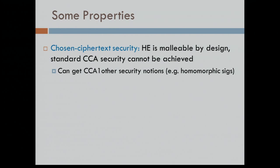Before talking about how to do homomorphic encryption, let me talk about some properties and limitations. One property that it definitely does not have is chosen ciphertext security — this is malleable by design. You cannot possibly get the standard notion of CCA security if your encryption scheme is homomorphic. You can get weaker notions, such as CCA1 or lunchtime-attack type security. There are other meaningful notions of non-malleability that apply, and homomorphic signatures is probably the most interesting of them.